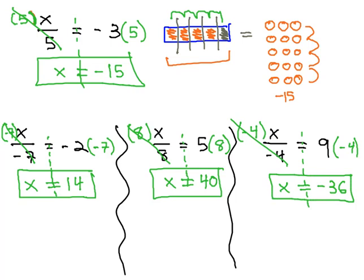We can check all four of these answers by replacing the variables with the numbers they represent. X, or negative 15, divided by 5, is negative 3. 14 divided by negative 7 is negative 2. 40 divided by 8 is 5. And negative 36 divided by negative 4 is 9.